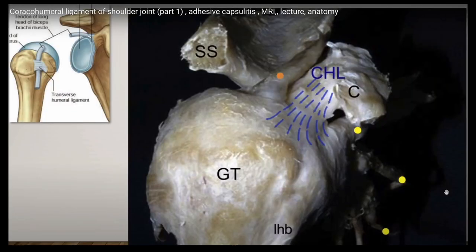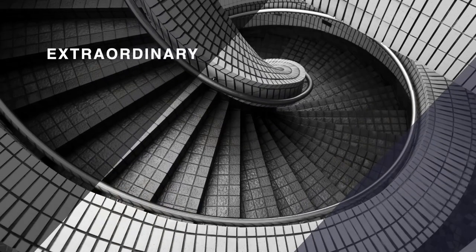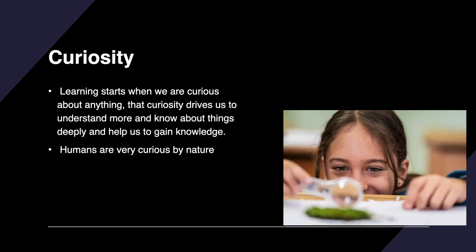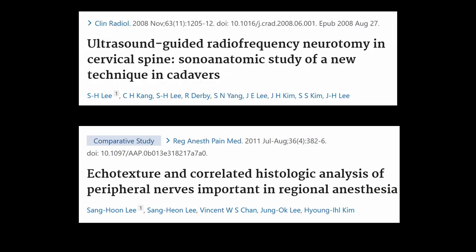I described the coracohumeral ligament in my YouTube channel previously. If you have extraordinary interest in the anatomy of a special region, you are allowed to dissect during the dissection period as long as you do not disturb the main dissection. You can study more about the inferior clunial and pudendal nerves in the perineal area. Learning starts when we are curious — curiosity drives us to understand more deeply and gain knowledge. I have developed my knowledge and ultrasound skills through curiosity and anatomic dissection study. Cadaver dissection and practical anatomic study are excellent ways to build your knowledge and skills. Good luck, and see you in the anatomic lab.